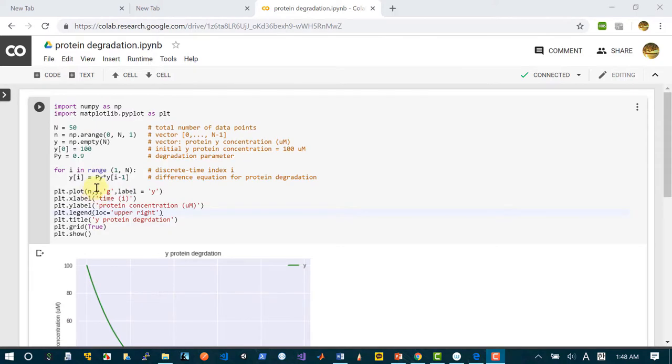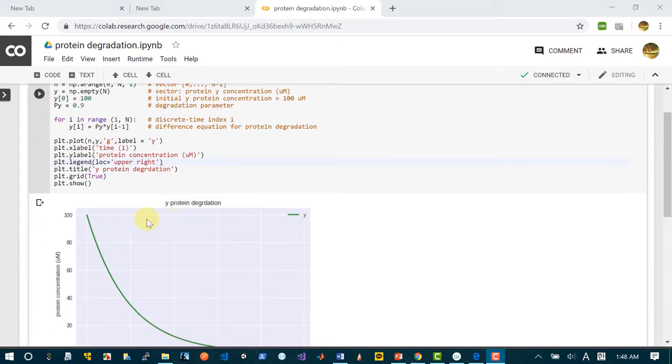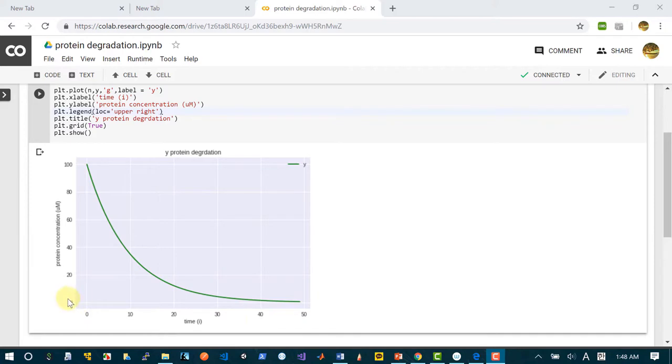This small y is protein concentration vector. And basically we are plotting small n against small y. So for each value of small n we have small y value.